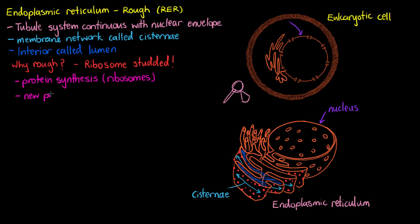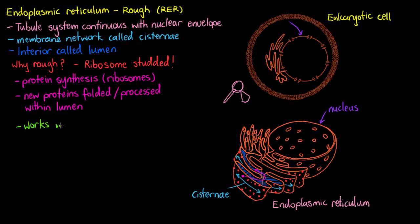Our rough endoplasmic reticulum is then going to be able to process and fold all of these proteins that our ribosomes are making. So new proteins are folded and processed within the lumen of our rough endoplasmic reticulum. We know that our ribosomes synthesize new proteins, and then that protein goes into the lumen of our rough endoplasmic reticulum where it can be folded and processed.